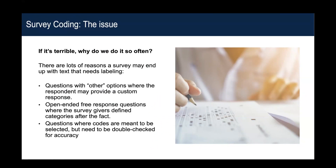Why does it happen so often? You probably already are thinking of the many times where you might fill out a survey and there are those open text fields. A lot of fields will want to provide an 'other' option. Sometimes you don't know what you're looking for yet — you want to give people the opportunity to put feedback, and you don't know what kind of feedback they're going to give. So you really do need to give them the ability to say whatever is on their mind about the topic.